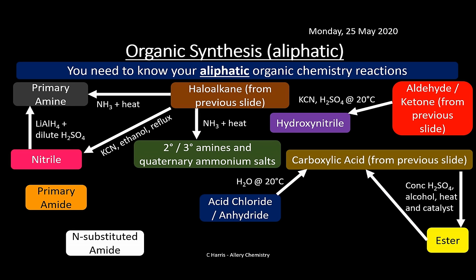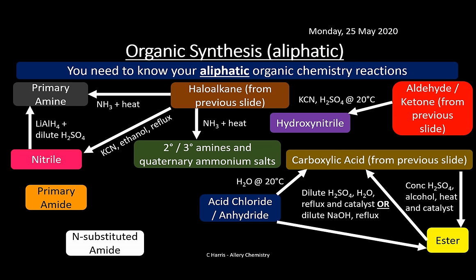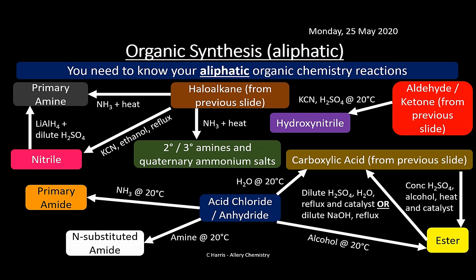Ester to carboxylic acid (hydrolysis): dilute sulfuric acid and water under reflux, or dilute sodium hydroxide under reflux. Acid chloride to ester: alcohol at 20°C. Acid chloride to primary amide: ammonia at 20°C. Acid chloride or anhydride to N-substituted amide: an amine at 20°C.